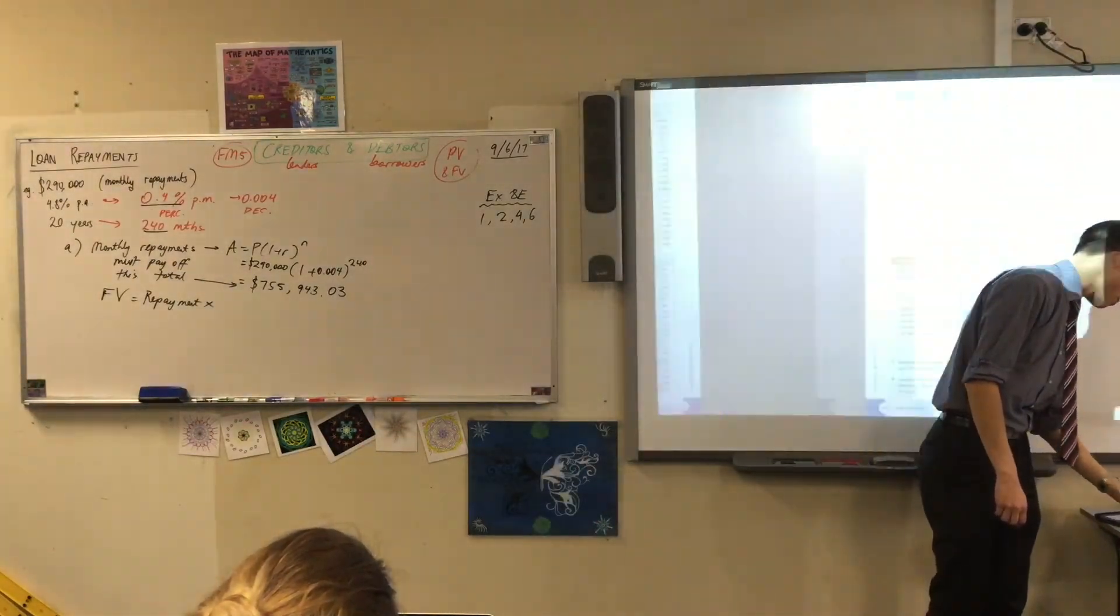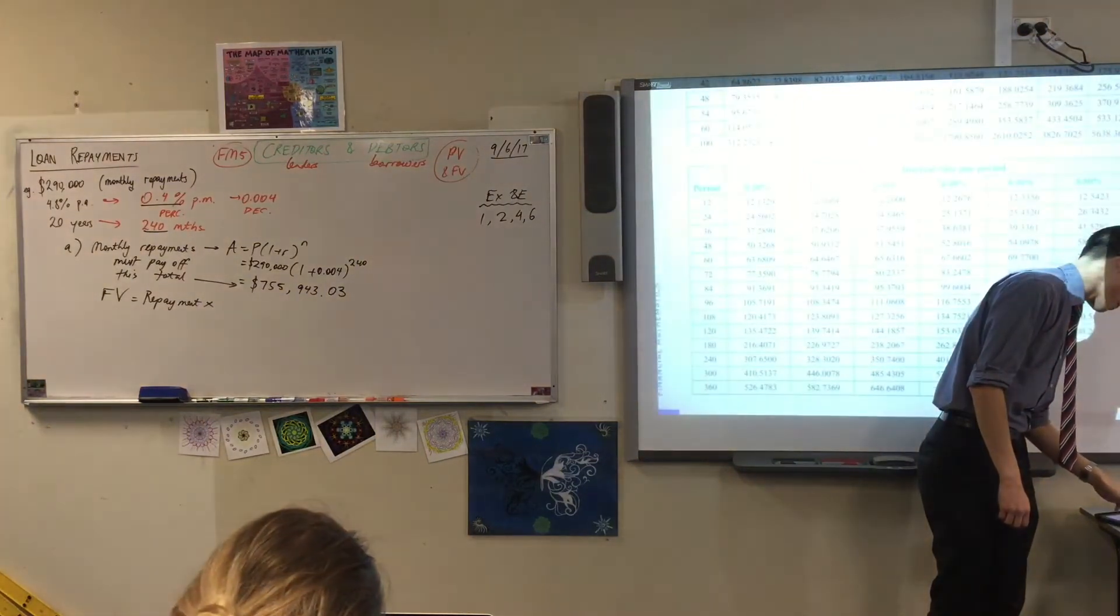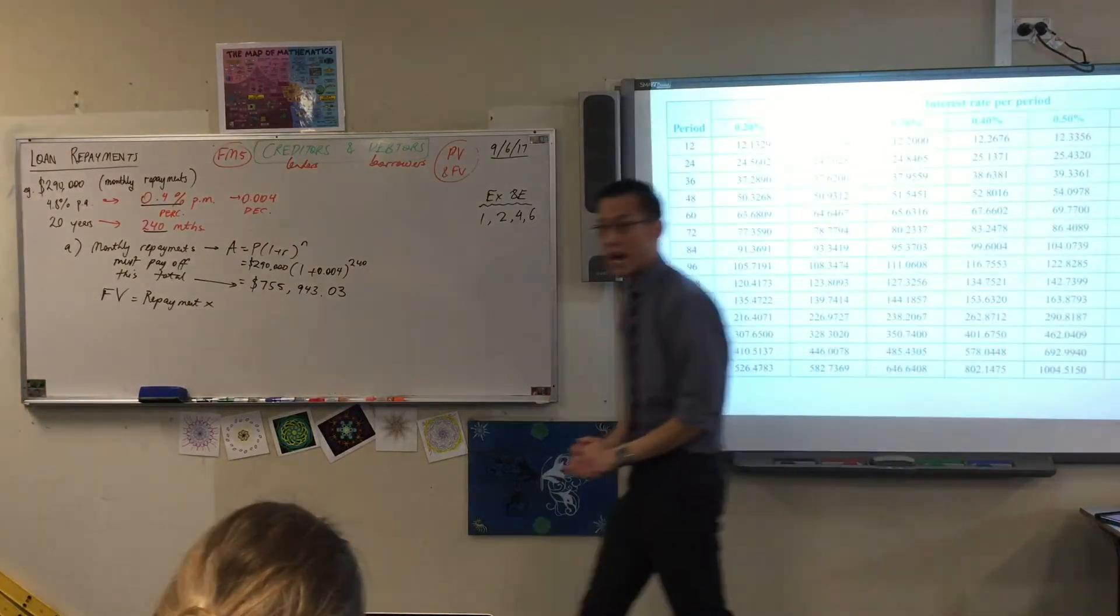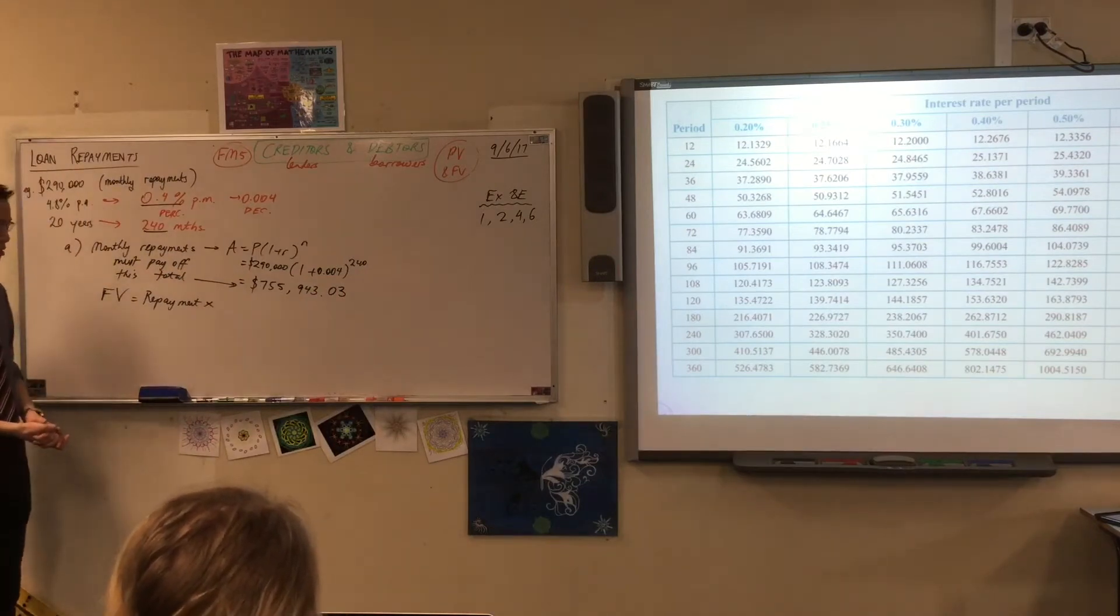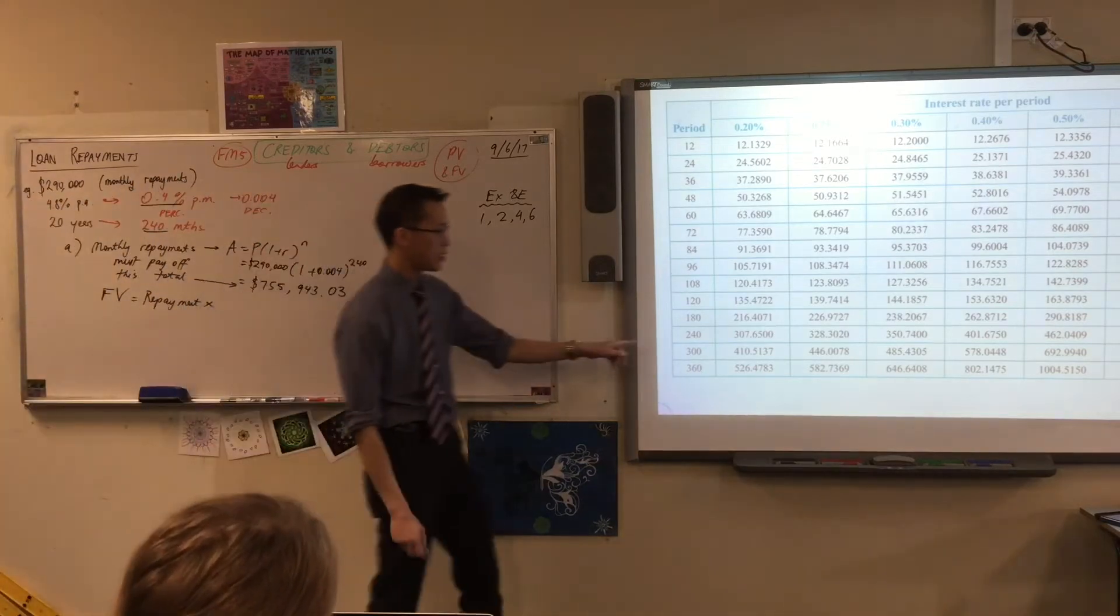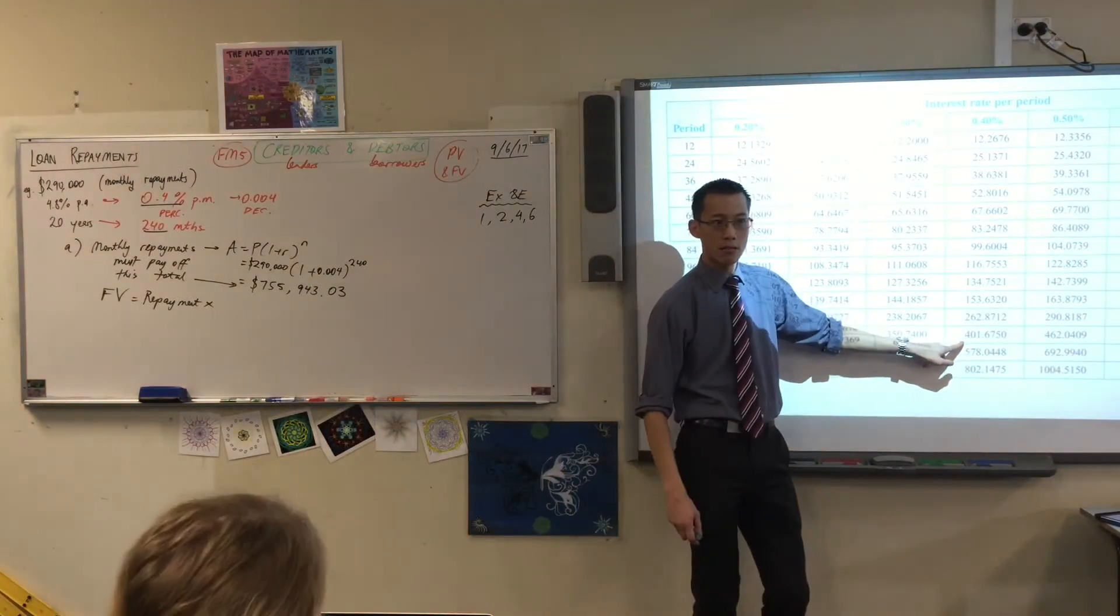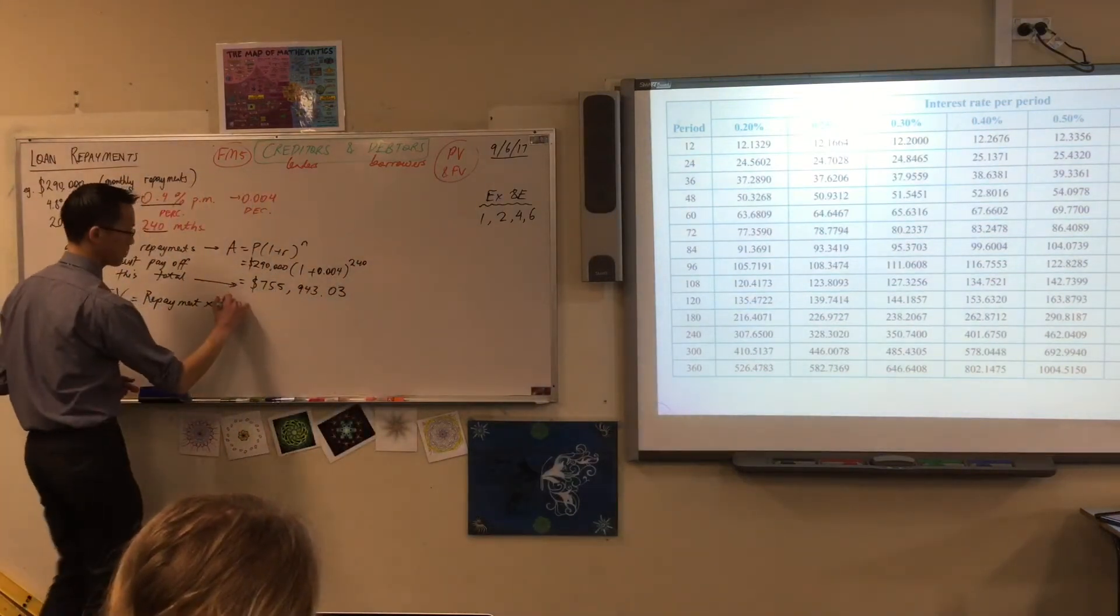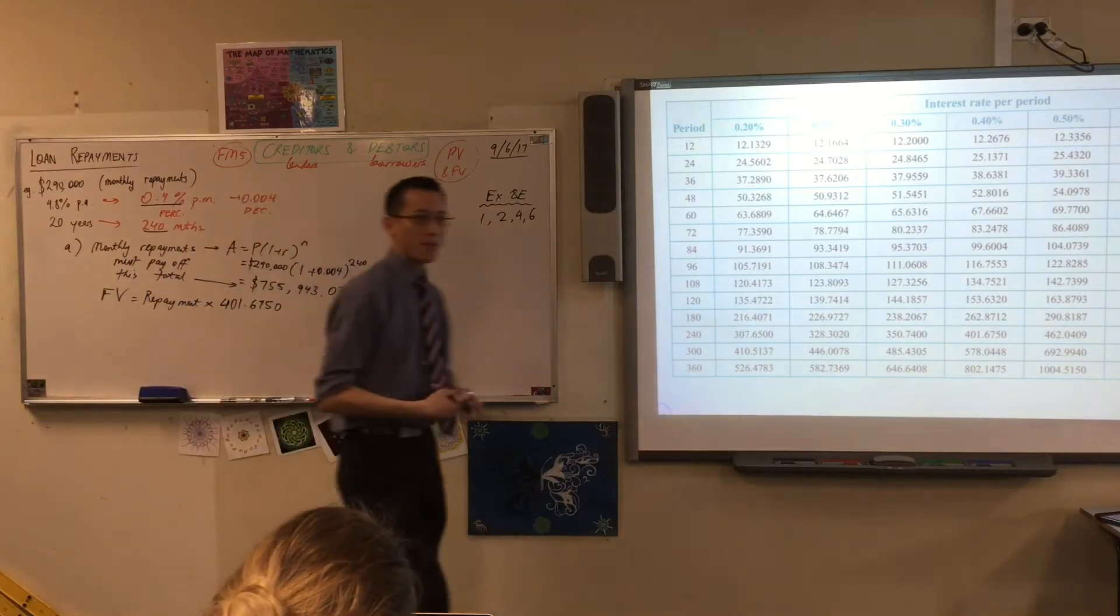So this is a few pages back. Yes, there we go. Okay, so have a look. Can you see the right row and the right column that I'm after? Do you see it? Look, 240 is here, and I'm going to count across to 0.4%. I think it's that number there, isn't it? 401.675. Okay.